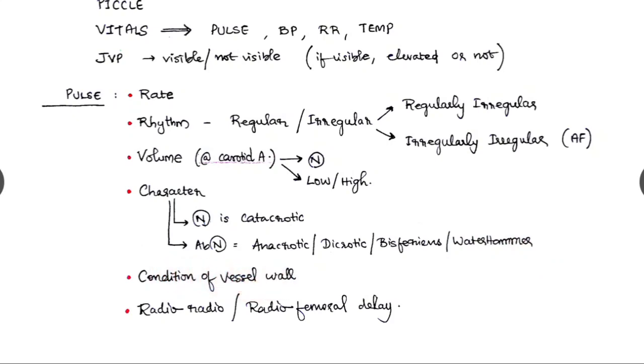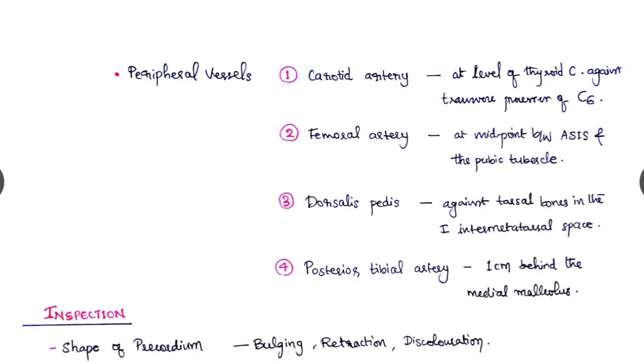And we have to check whether there is any radio-radial delay or any radio-femoral delay, and other pulsations we have to check with peripheral vessels like carotid artery, femoral artery, dorsalis pedis and posterior tibial artery, and also there is popliteal artery which is very difficult to palpate.